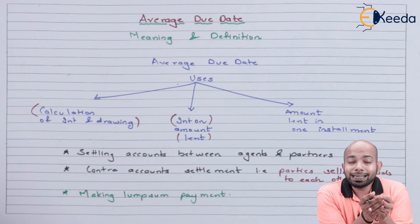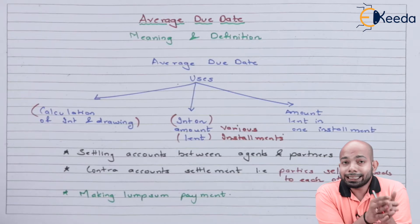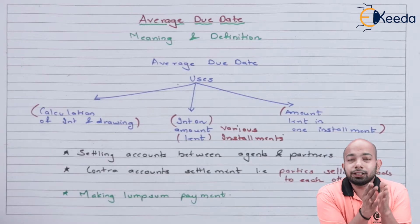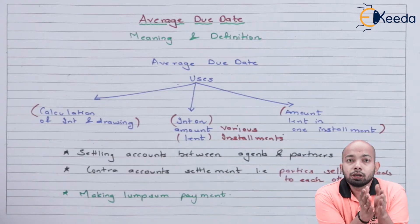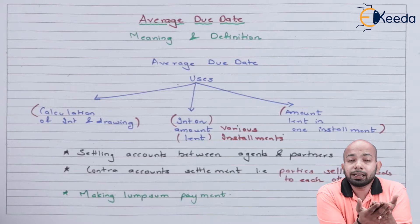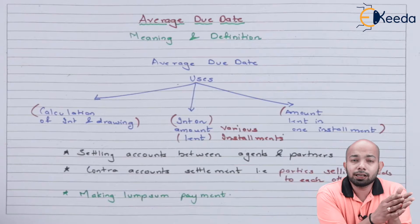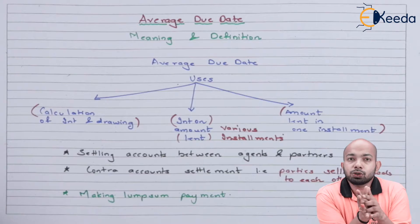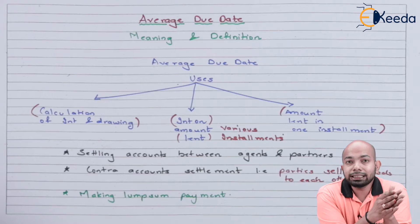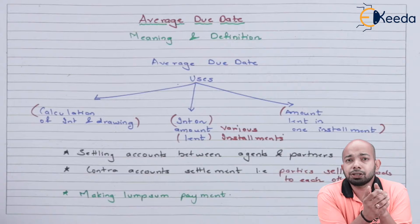The interest on the amount that is lent in various installments and the interest on the amount which is lent in only one installment. So these are basically the short-term and long-term loans. There may be a short-term loan which you might have taken for a month. There is one specific loan which you might have taken for six months that means equated monthly installments going out for every month for the next six months. When you have to calculate the interest on these methods, you can use average due date concept.